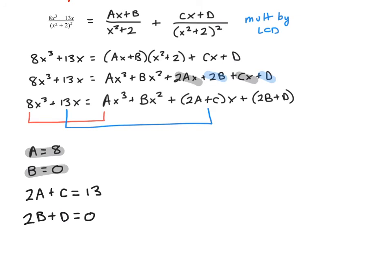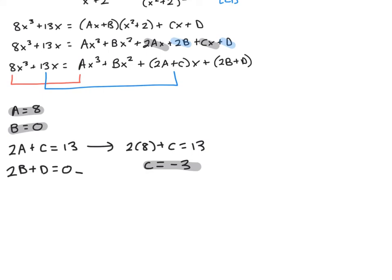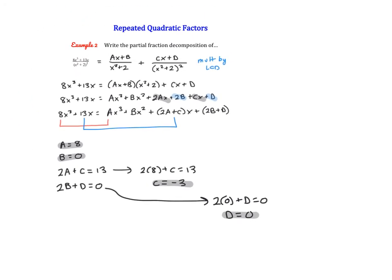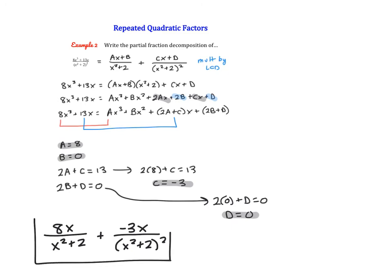We've already solved for a and b, so we substitute to solve for c: 2 times 8 plus c equals 13, so c equals negative 3. Then substituting b equals 0 into 2b plus d equals 0 gives d equals 0. We've found all four variables. Substituting back into the decomposition, we get 8x over x squared plus 2, plus negative 3x over x squared plus 2 squared. We're all done.